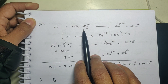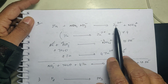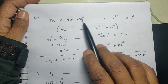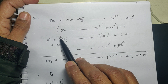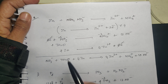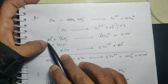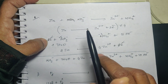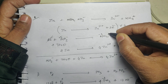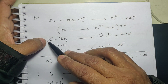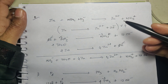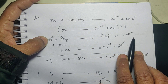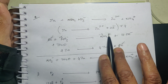Same equation — we saw it in acidic medium — we can see it in basic medium also: Zn + NO₃⁻ gives Zn²⁺ + NH₄⁺. Zinc to Zn²⁺ plus electrons is simple. For NO₃⁻ to NH₄⁺: nitrogen goes from +5 to -3, so you add 8 electrons. Total negative charges on reactant side: minus 8 minus 1 = minus 9. On the product side there is already a positive charge, so you add 10 OH⁻ because minus 10 plus 1 gives minus 9.